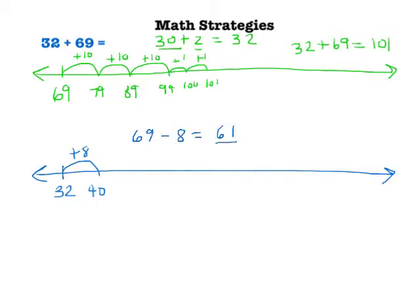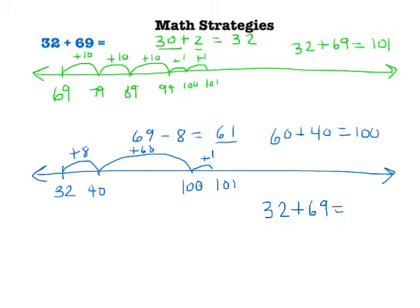So I still have 61 that I need to add on to it. But I'm not going to add 61. I'm going to add 60 because I know that those landmark numbers are easier to add together. I also know that 60 plus 40 equals 100. So I'm going to add 60 to 40, and that will equal 100. And all I have left is the 1, which makes that 101. So 32 plus 69 equals 101.